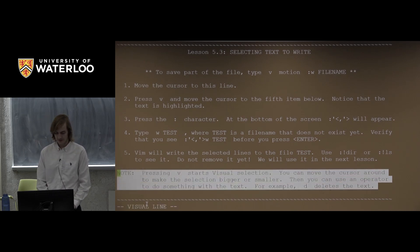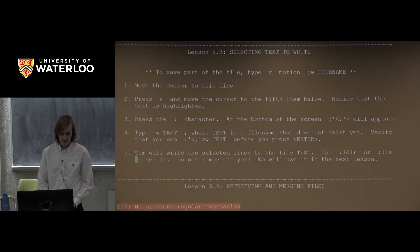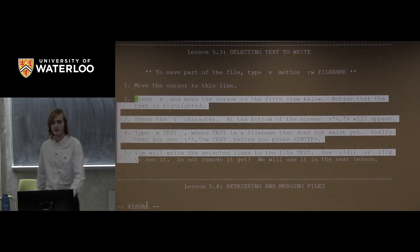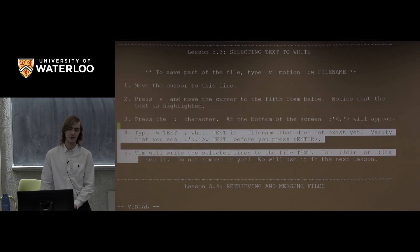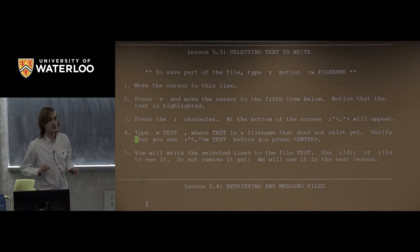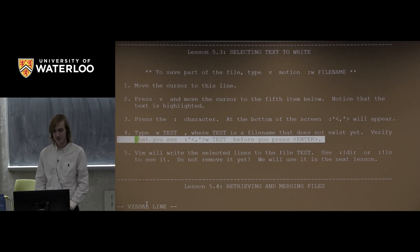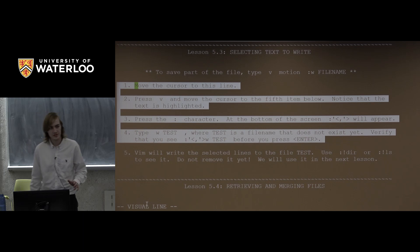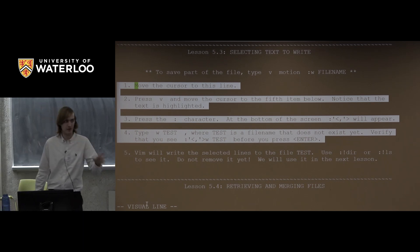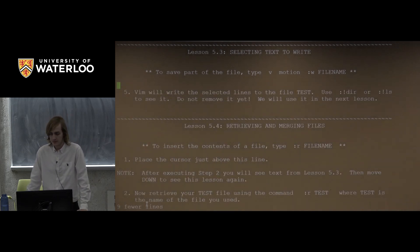In visual mode, D deletes the selected text. If instead you press capital V — shift V — you get visual line mode, which always selects whole lines. This is useful if you don't want to bother moving your cursor to the start and end of a line — just select the whole line right from the start with shift V and use D to delete it if needed.